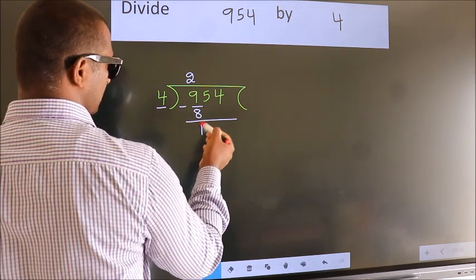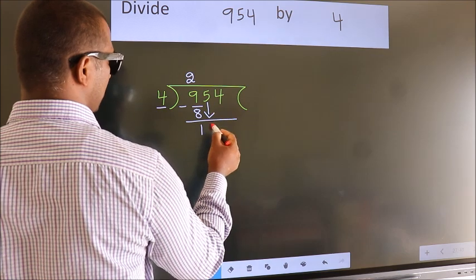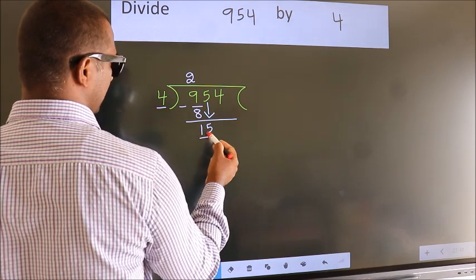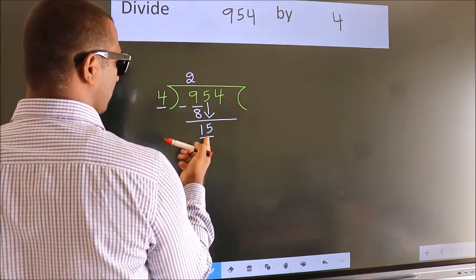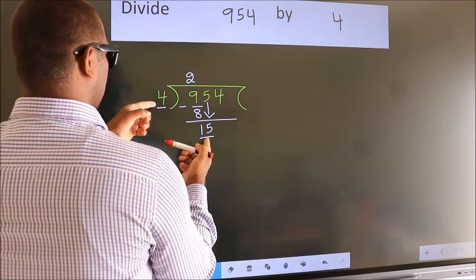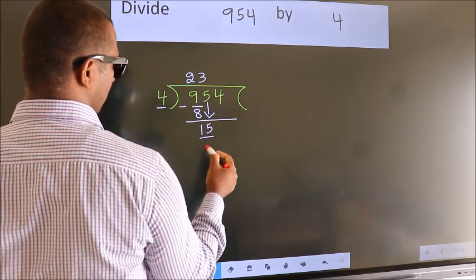After this, bring down the beside number. So, 5 down. 15. A number close to 15 in 4 table is 4 threes, 12.